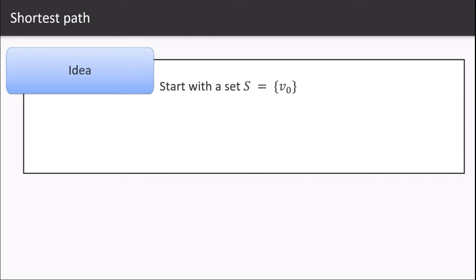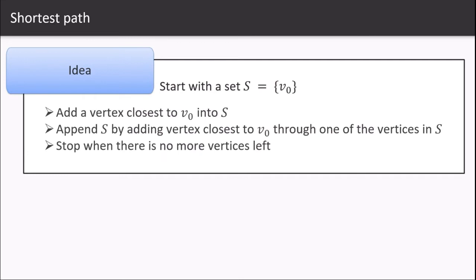So the idea is to find the shortest path from vertex v0 to all other vertices. Start with the set S with the source vertex itself v0. Add a vertex closest to v0 into the set S. Append S by adding vertex closest to v0 through one of its vertices in the S. Stop when there is no more vertices left.